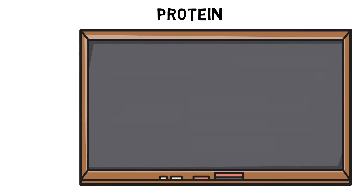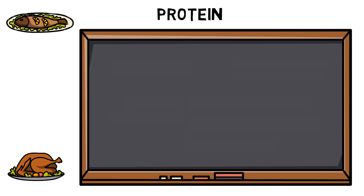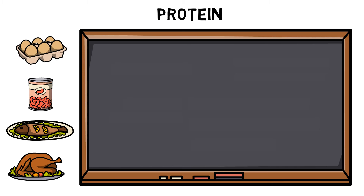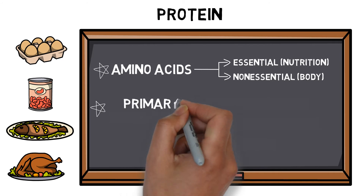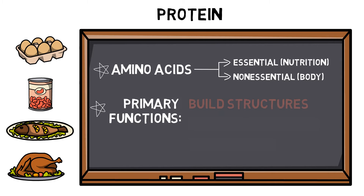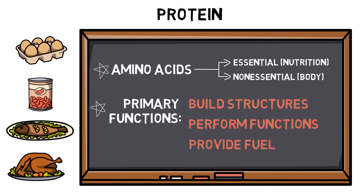Protein are the building blocks of the body that help create and repair tissues and structures all over the body. Protein can be found in food such as meat, fish, beans and eggs, and are made up of amino acids. Amino acids can generally be classified as either essential amino acids, which cannot be manufactured by the body and therefore must be obtained through food or supplementation, or non-essential amino acids, which the body has the ability to manufacture itself. Protein has three primary functions: to help build structures such as muscles, bones and internal organs; to help perform functions through structures such as hormones and enzymes; and to provide fuel. Despite protein not being the body's preferred choice of energy store, it can still provide energy when called upon.